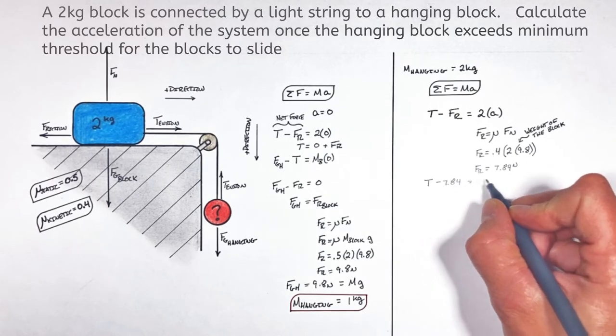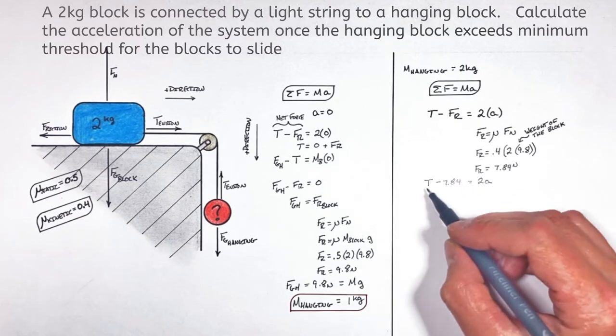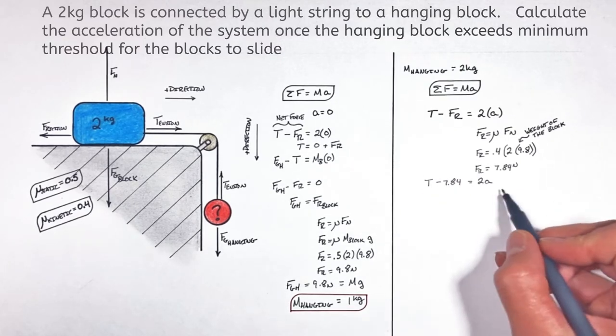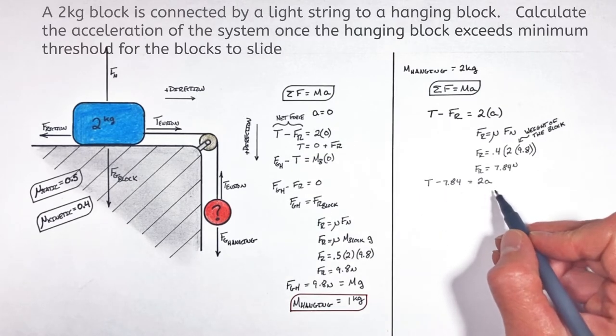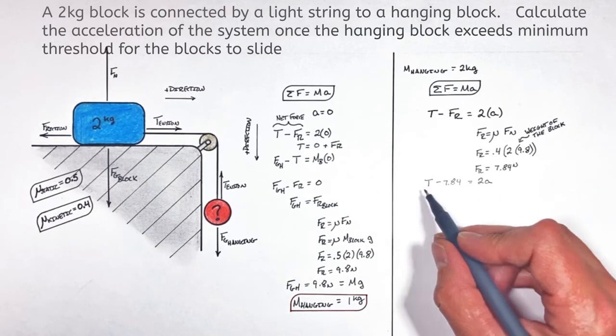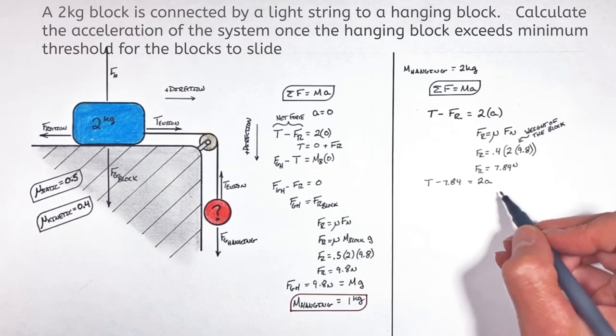So substituting that friction force back into Newton's second law for the block, we get this expression which has two unknowns, T and a, leaving us with this equation with two unknowns, tension and acceleration. Now just like in math class, if we have two unknowns we need two equations to solve for either of those unknowns.